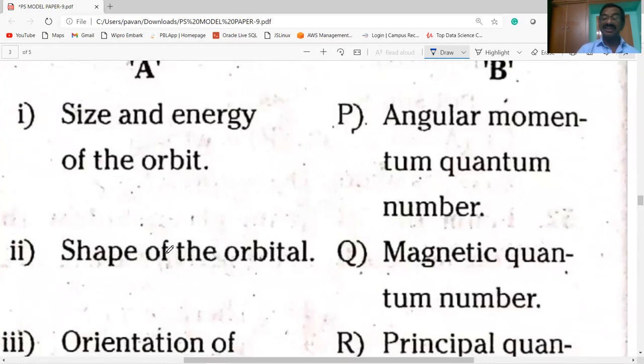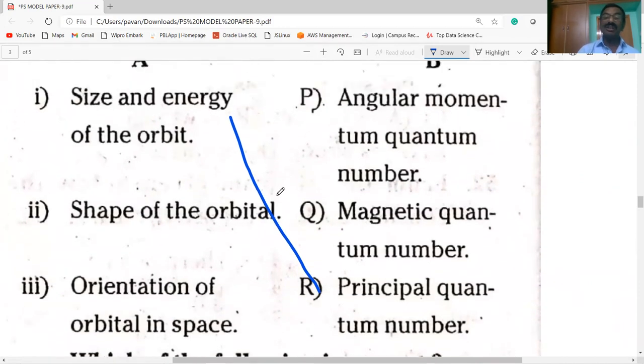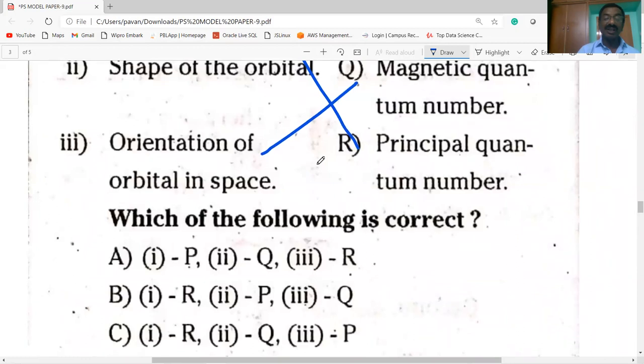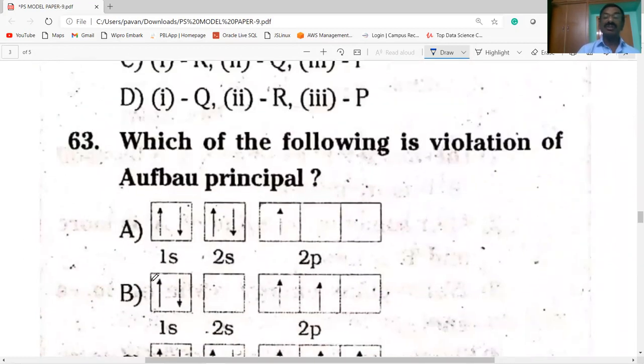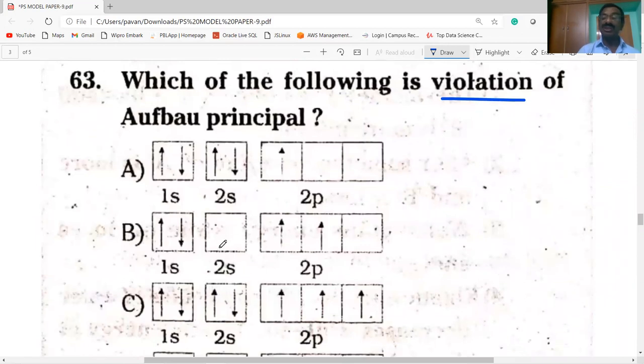Match the following: size and energy of the orbit, principal quantum number. And the shape of the orbital, angular momentum quantum number. Orientation of the orbital in space, magnetic quantum number. Option B is correct. Which one of the following is the violation of above principle? Here option B, there is no electrons in 2s orbital. Without being filled 2s orbital, electron enters into 2p orbital, which is higher energy than 2s. It is the violation of above principle.